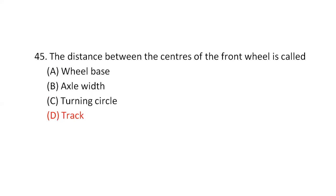The distance between the centers of the front wheels is called — option D — track.